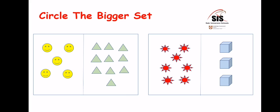Now on the number line: one, two, three, four, five — write five above it. Then count on: one, two, three, four, five, six, seven, eight, nine, ten — write ten above it. As ten is bigger than five, we're going to put a circle around this set.